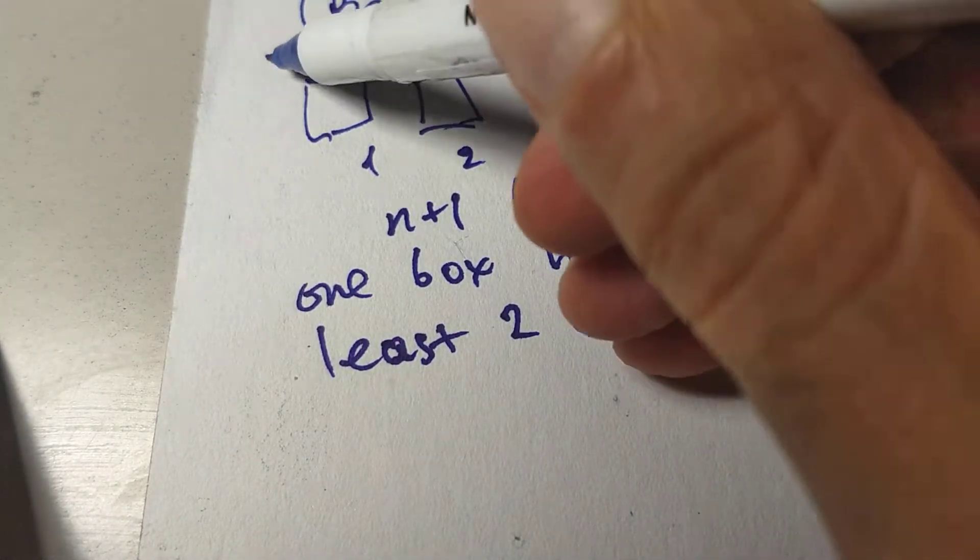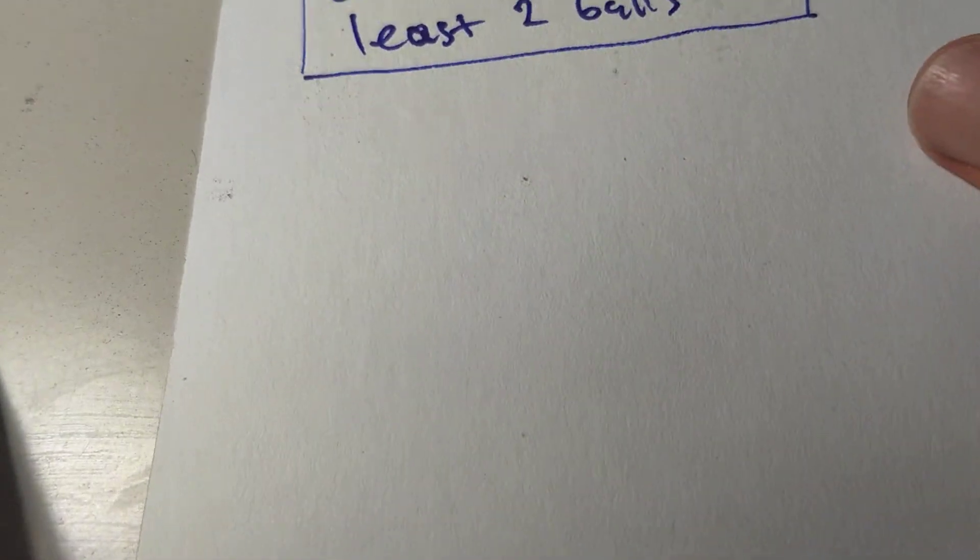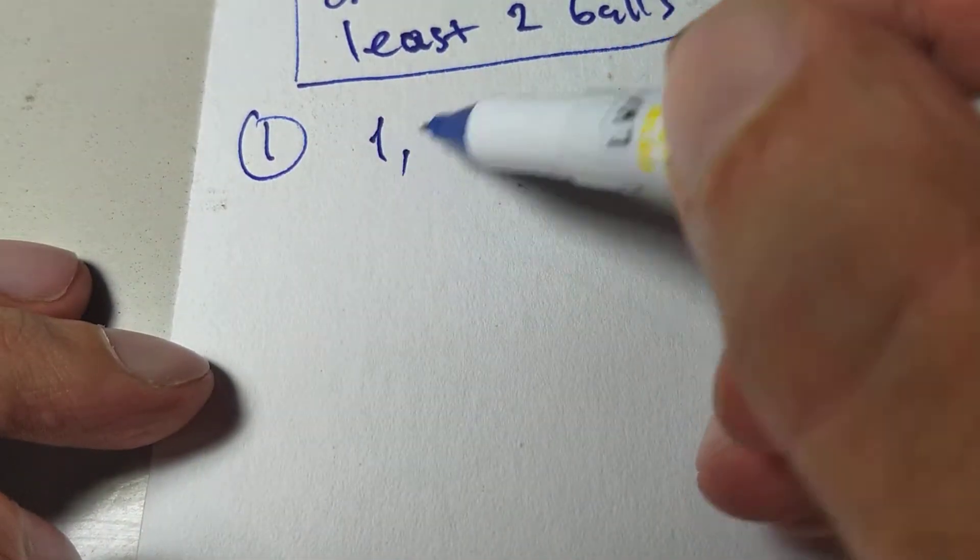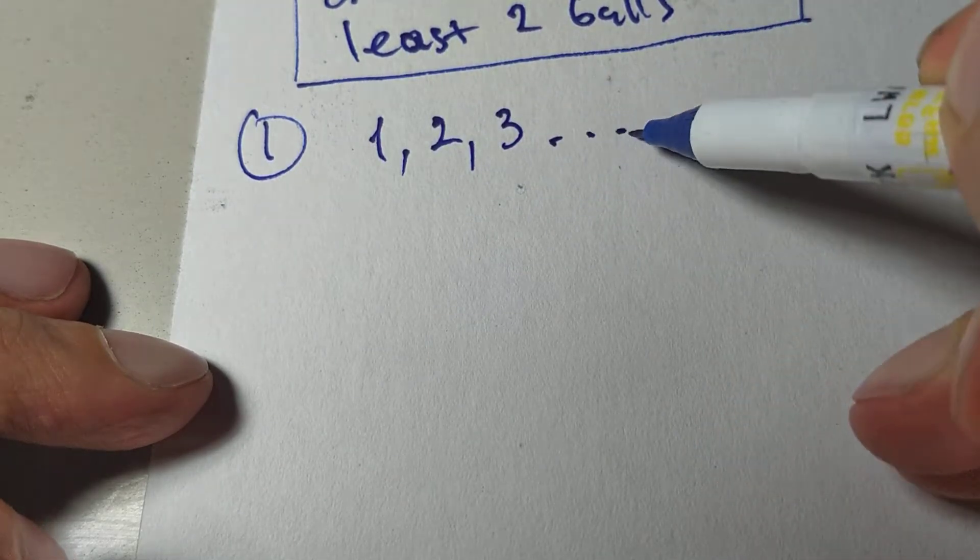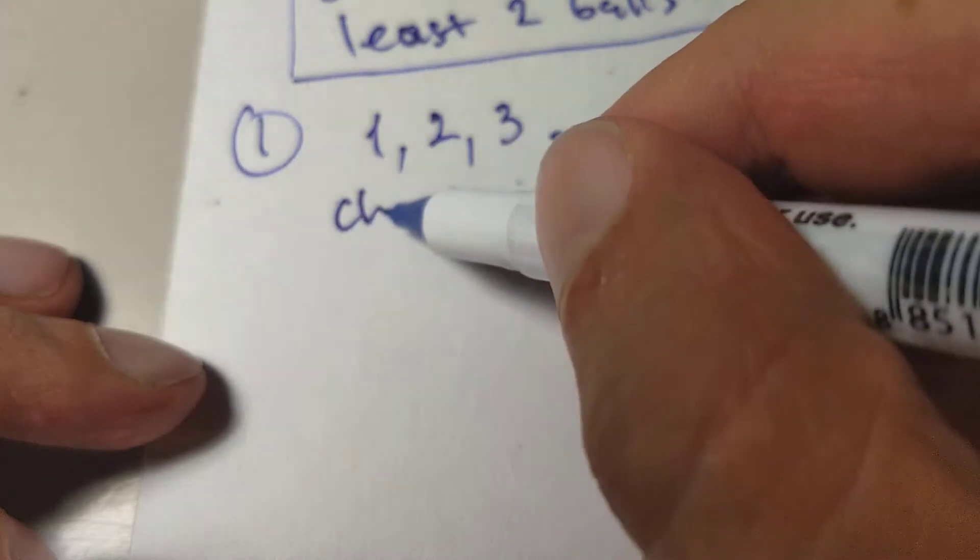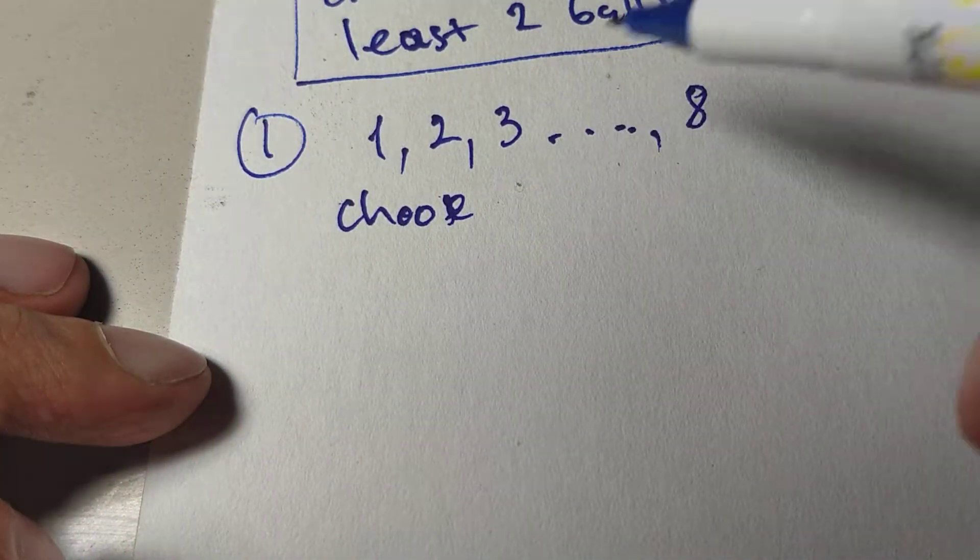So that's the most basic form, and there's still a lot for us to do here. Let's take problem one, and we have eight numbers. This is a really cute problem. Eight numbers, and we choose five of them.